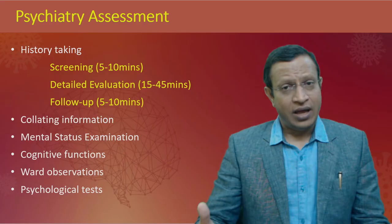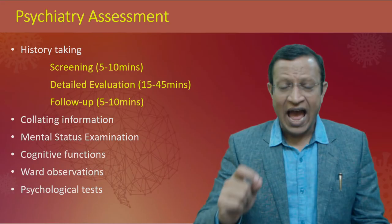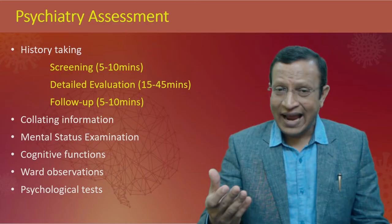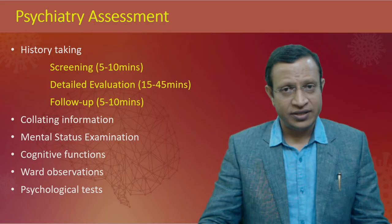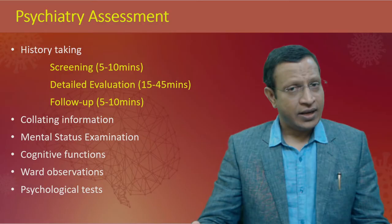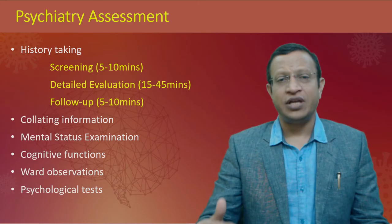Collating information: since psychiatry has no lab tests, we must collect information from the patient, family members, friends, and relatives. If the patient is working, you can contact employers with the patient's consent. If referred from police or forensic agencies, collect information from those sources. Collecting information from various sources gives accuracy in diagnosis. Mental status examination, cognitive function, ward observations, and psychological tests will also yield a good diagnosis.